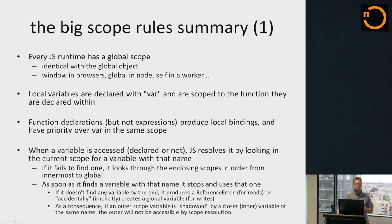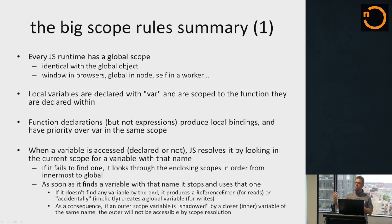Local variables are declared with var, and those are scoped to the function they're declared within. Lexical scope just means that you can figure out the scope of a symbol based on where in the parse tree the actual declaration is — there's a correlation between the place where the thing is declared and the scope of it. Function declarations also produce local bindings, and those actually turn out to have priority over vars in the same scope.